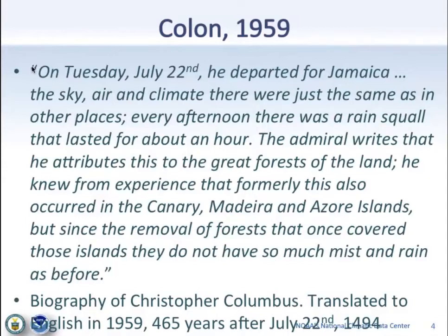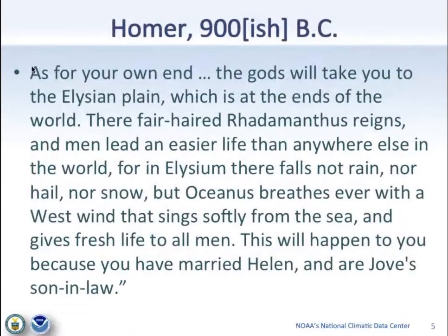That's a 500-year-old observation of something he noticed: the weather changed in a particular place and he tried to attribute why. In a similar spirit, in the Odyssey, Homer begins his description of every single place with a kind of climate description — the winds out of a certain direction, the rains coming at a certain time of year, whether the ocean is angry or not. These are climate observations from hundreds to thousands of years ago.